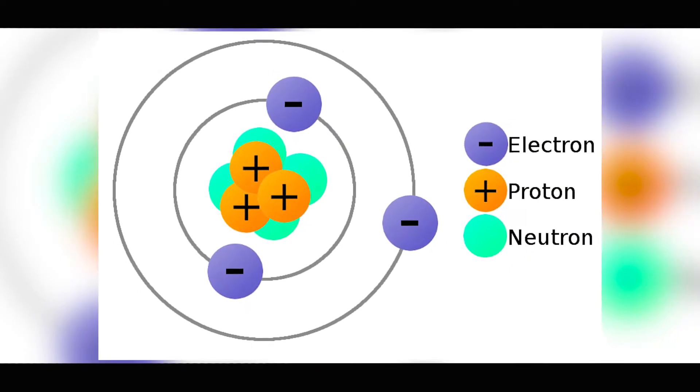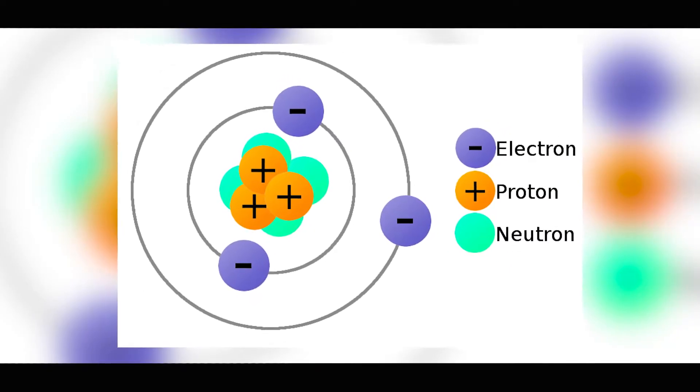Inside of an atom you're going to have three major subatomic particles. Subatomic means the pieces of an atom. They're smaller than an atom but they make up the entire atom.